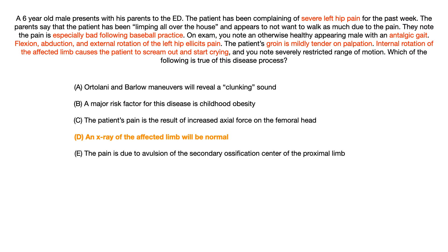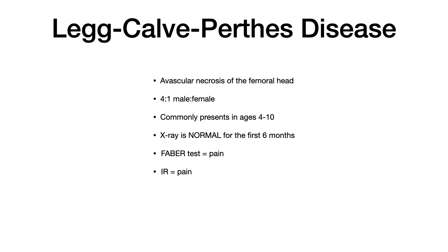I've highlighted in red the really important parts of this question. You've got severe left hip pain that's especially bad following exercise, an antalgic gait, flexion, abduction, and external rotation of the left hip causes pain — that's the FABER test — the groin is tender to palpation, and internal rotation causes an immense amount of pain where the patient screams out. All of this, along with the fact that this is a six-year-old male, should point you toward Legg-Calvé-Perthes disease. In a nutshell, this disease is basically avascular necrosis of the femoral head. It classically affects males far more than females — the ratio is four to one — and these patients are usually in the age range of four to ten years old. Very high yield. The x-ray is actually normal for up to six months.